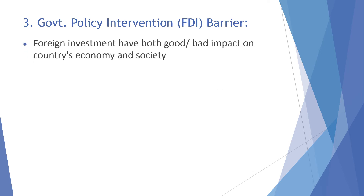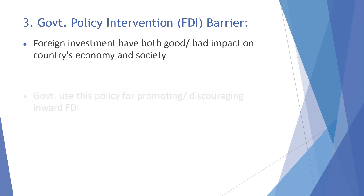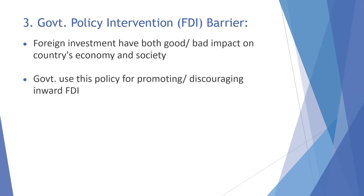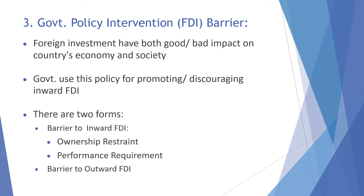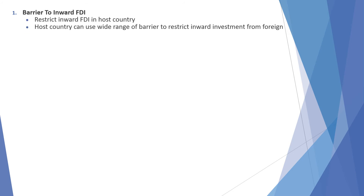Government intervention on FDI barriers: foreign investment has both positive and negative impacts on a country's economy and society. The government uses policy for promoting and discouraging inward FDI. There are two forms: barriers to inward FDI and barriers to outward FDI. Regarding barriers to inward FDI, the host country can use a wide range of barriers to restrict inward investment.